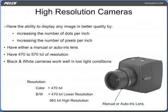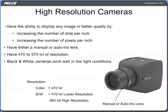High resolution cameras have the ability to display any image in better quality by increasing the number of dots per inch or increasing the number of pixels per inch. High resolution cameras have either a manual or auto iris lens and have 470 to 570 TVL of resolution. High resolution black and white cameras work well in low light conditions.